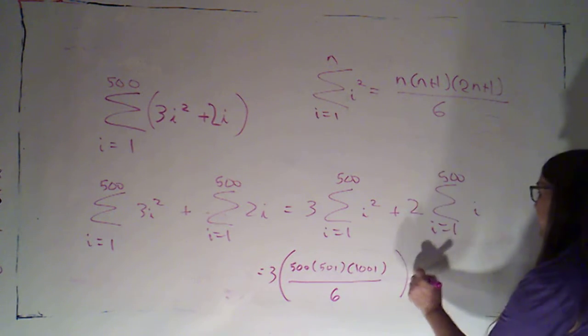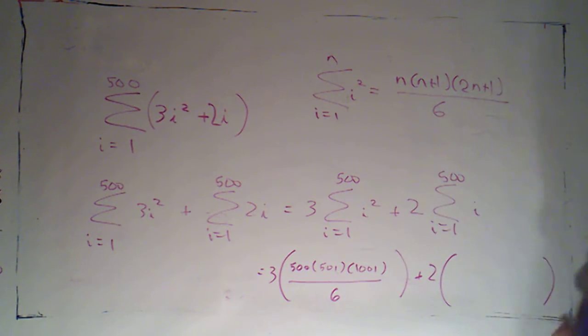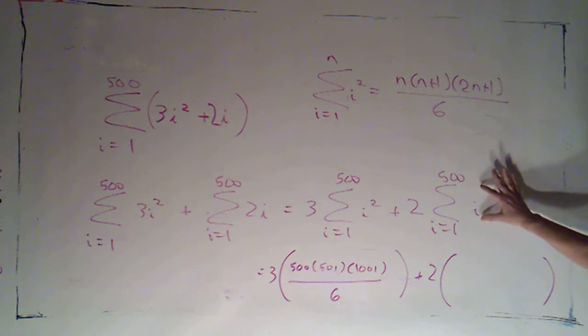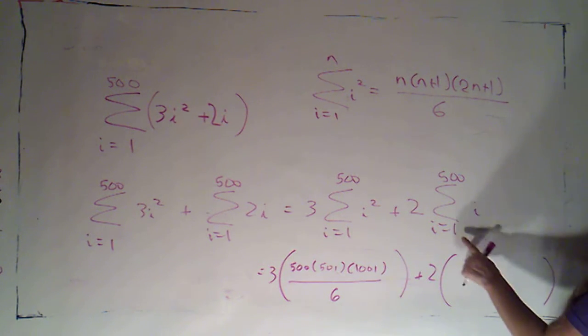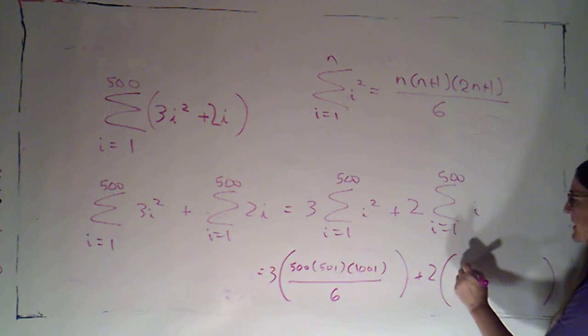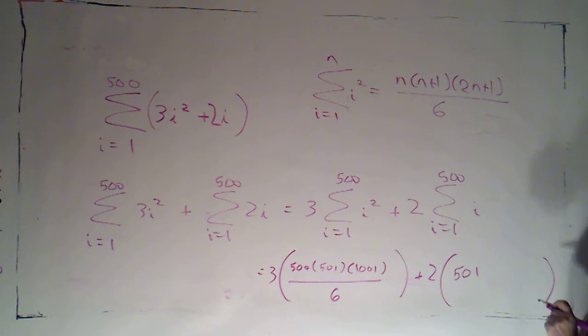And then here I'm getting two copies of, now here if I'm adding up the integers, remember the smallest plus the biggest will give me five hundred and one. But that's for each pair if I have five hundred numbers I have half as many pairs.